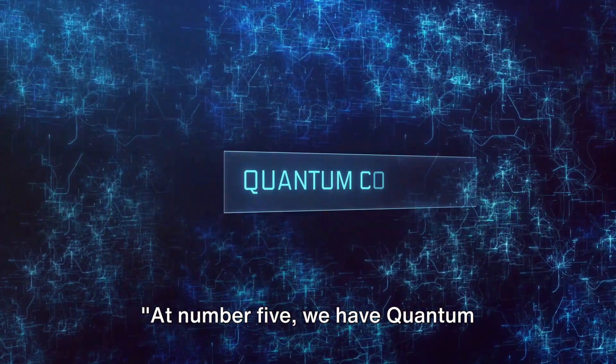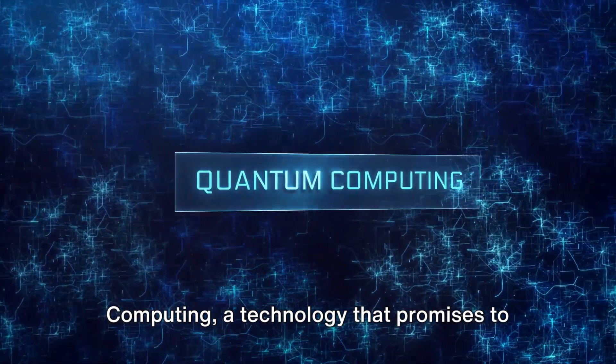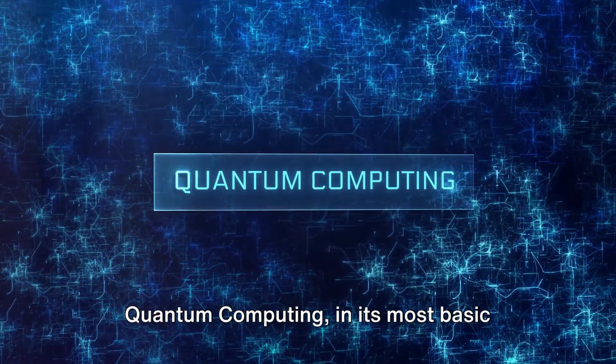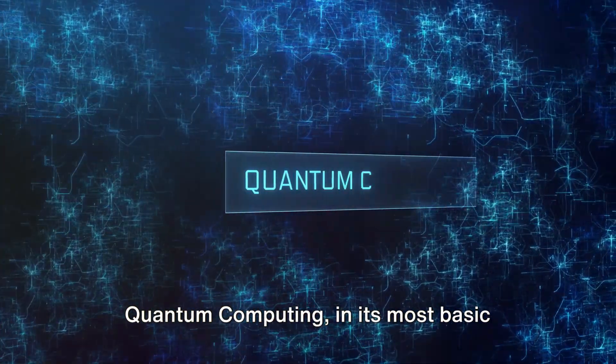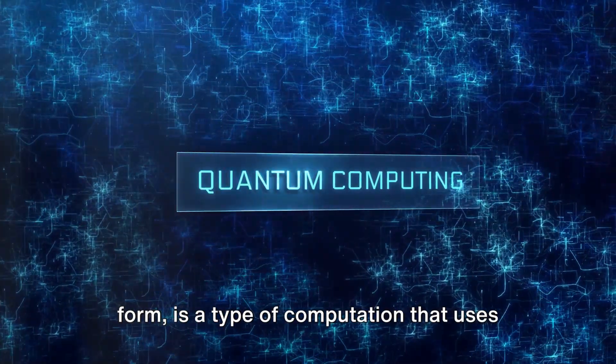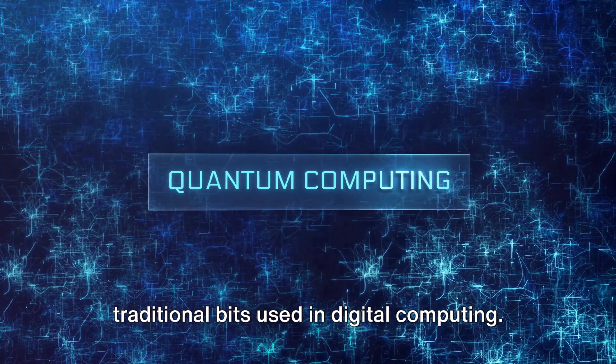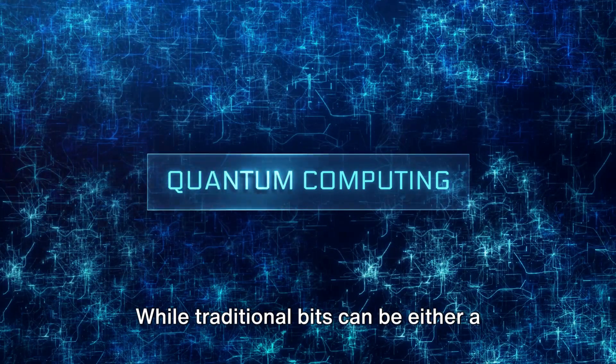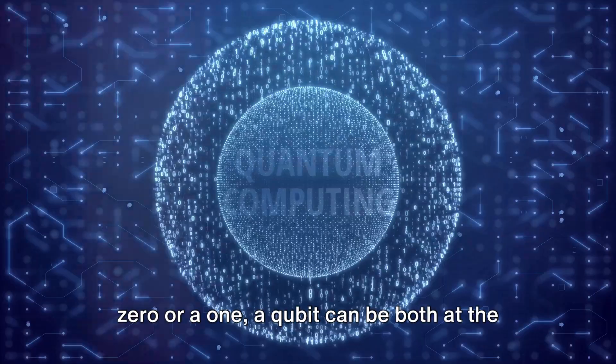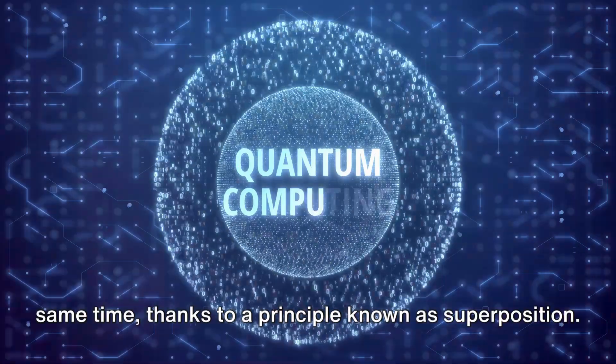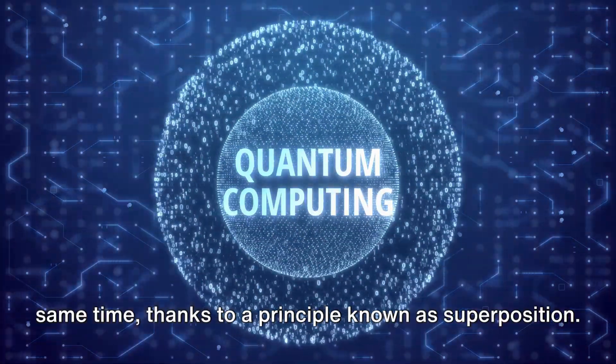At number 5 we have quantum computing, a technology that promises to revolutionize computing power. Quantum computing uses quantum bits, or qubits, instead of traditional bits. While traditional bits can be either a 0 or a 1, a qubit can be both at the same time, thanks to a principle known as superposition.